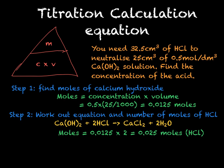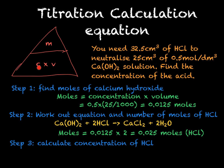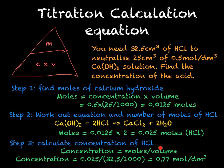We now have the moles of hydrochloric acid and its volume, but we need to convert the volume from cm³ to dm³. For step three, work out the concentration of HCl: concentration = moles ÷ volume = 0.025 ÷ (32.5 ÷ 1000) = 0.77 mol/dm³.